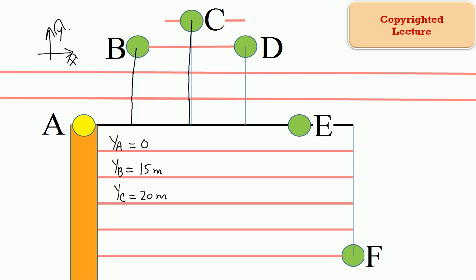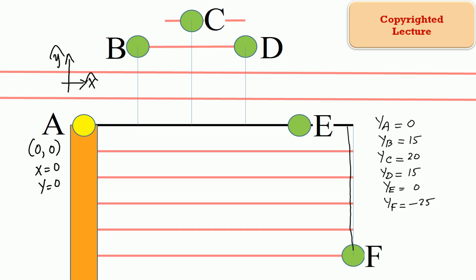The position of point D is 5, 10, 15 — so 15 meters. The vertical position of point E is just 0 meters. The position of point F is negative 5. Why negative? Because positive y is defined as vertically up — so negative 5, 10, 15, 20, 25. So: A is 0, B is 15, C is 20, D is 15, E is 0, F is negative 25.